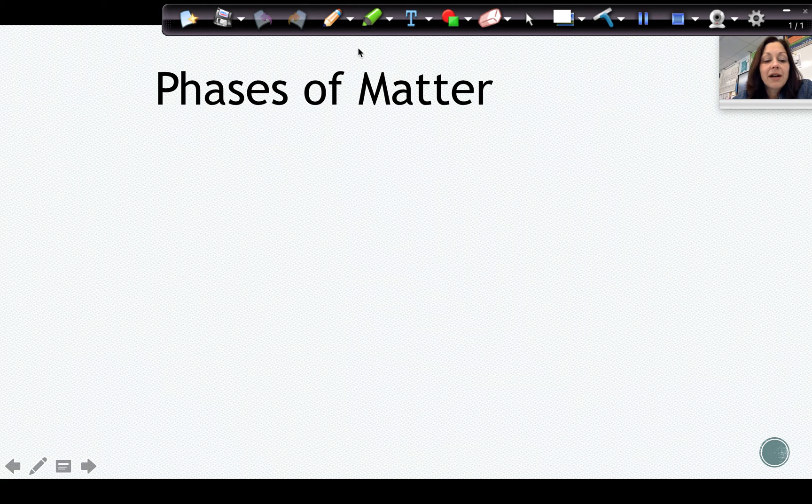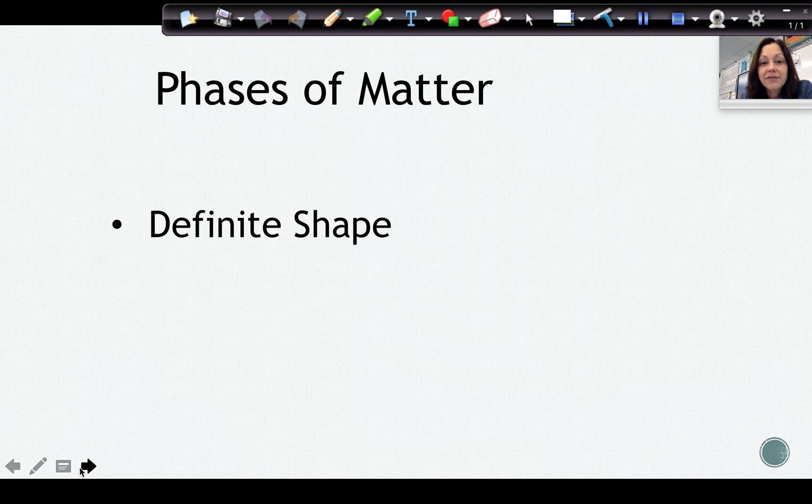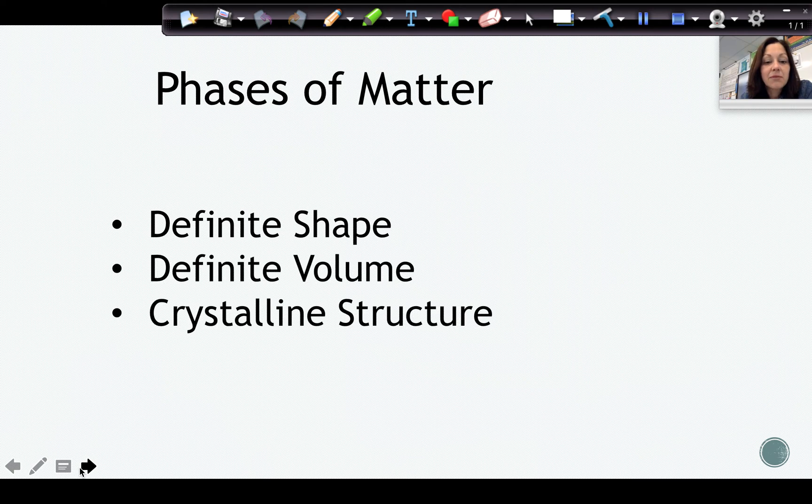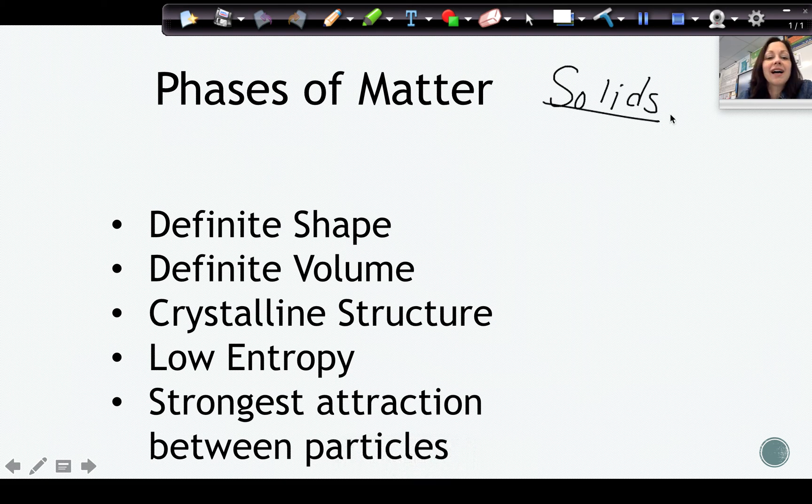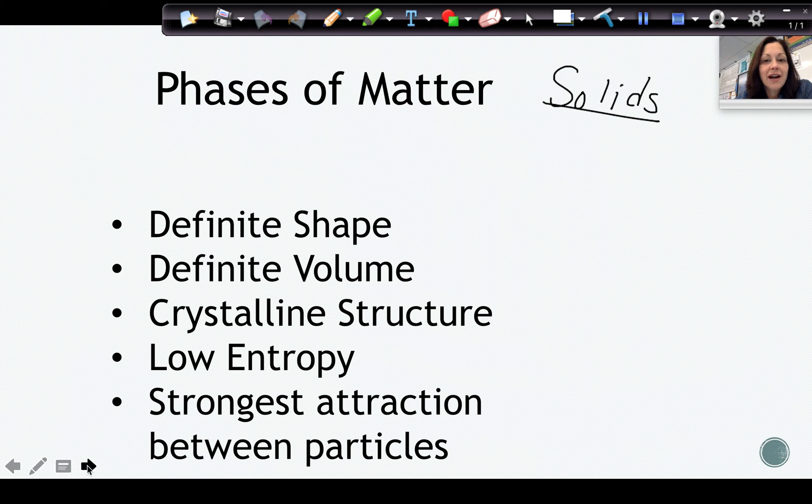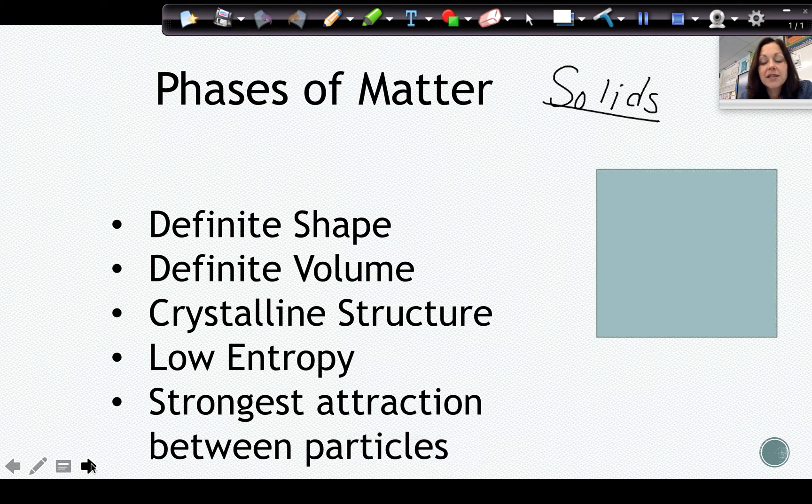The next thing that we have is our phases of matter. When we're talking about our phases of matter, we have, for solids, a definite shape, a definite volume, and a crystalline structure, and low entropy. For solids, we have a definite shape, definite volume, crystalline structure, and we're going to have low entropy. We're also going to have the strongest attraction between particles for solids.